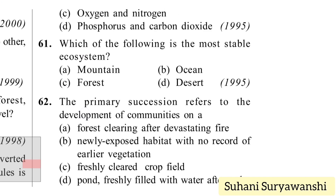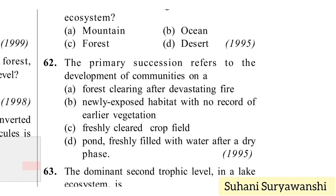Which of the following is the most stable ecosystem? Options: mountain, ocean, forest, or desert. Ocean will be the most stable ecosystem with fewer changes. Primary succession refers to the development of communities on a newly exposed habitat with no record of earlier vegetation — option B.